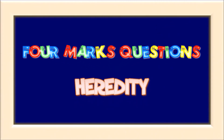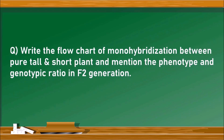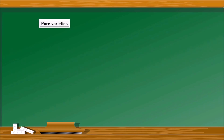4 marks questions from the chapter heredity. The first question: write the flow chart of monohybridization between pure tall and short plants and mention the phenotype and genotypic ratios in F2 generation. We will start with the pure varieties of tall and short with the factors capital T capital T and small t small t.